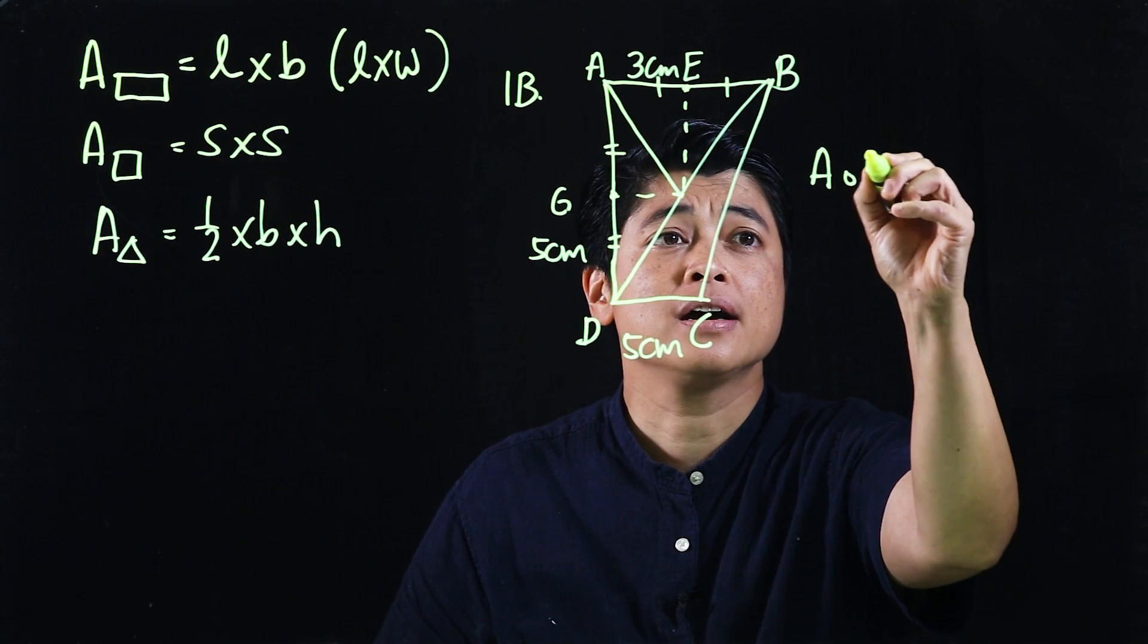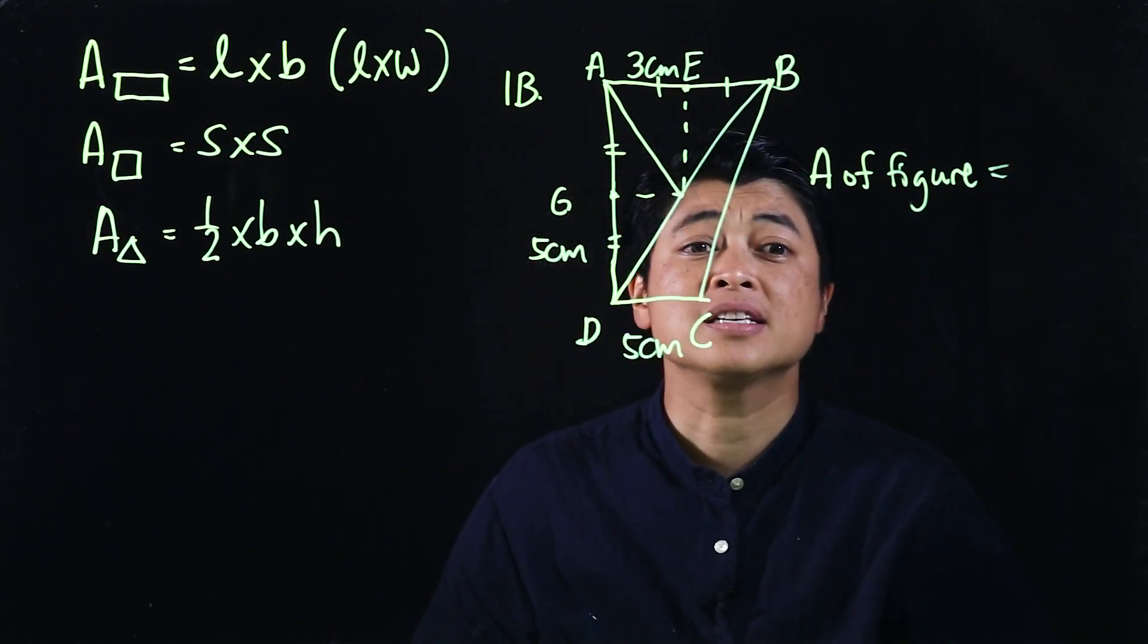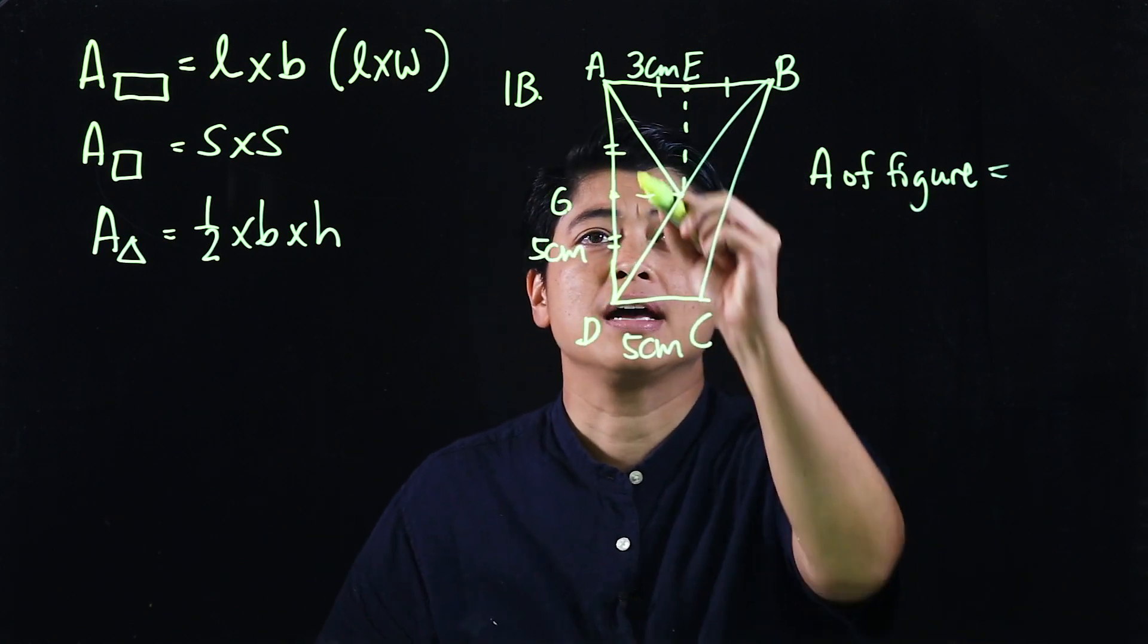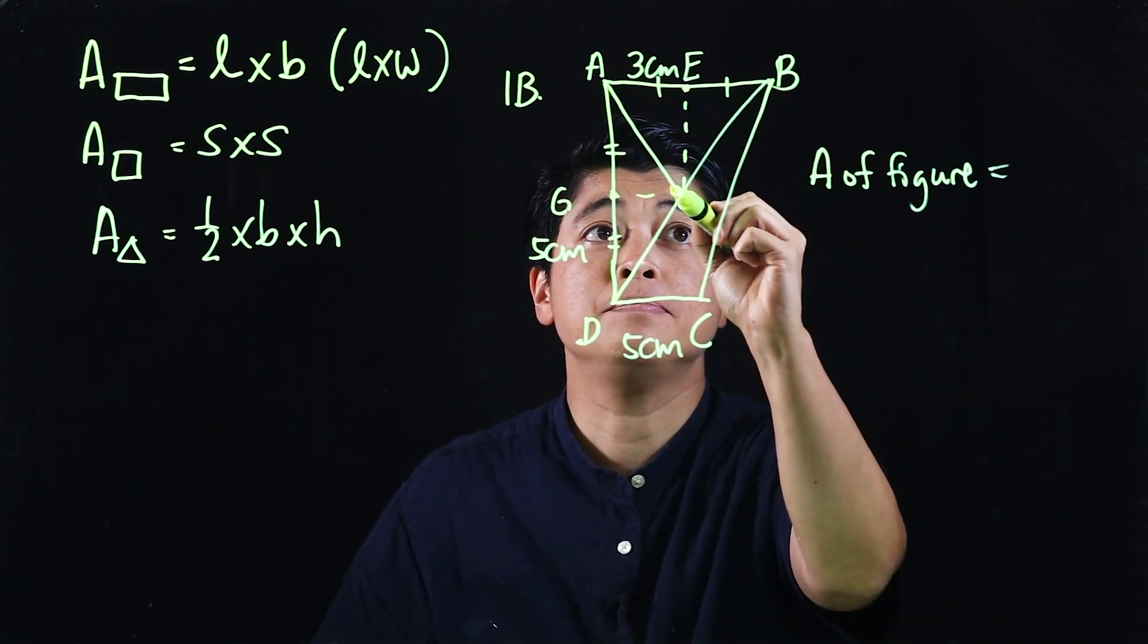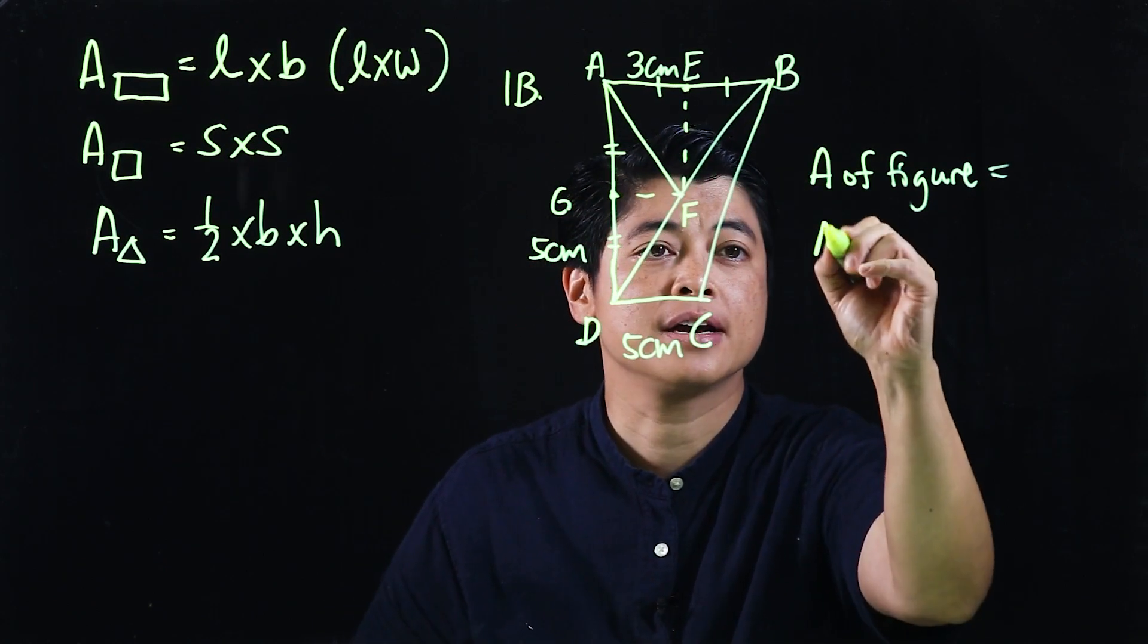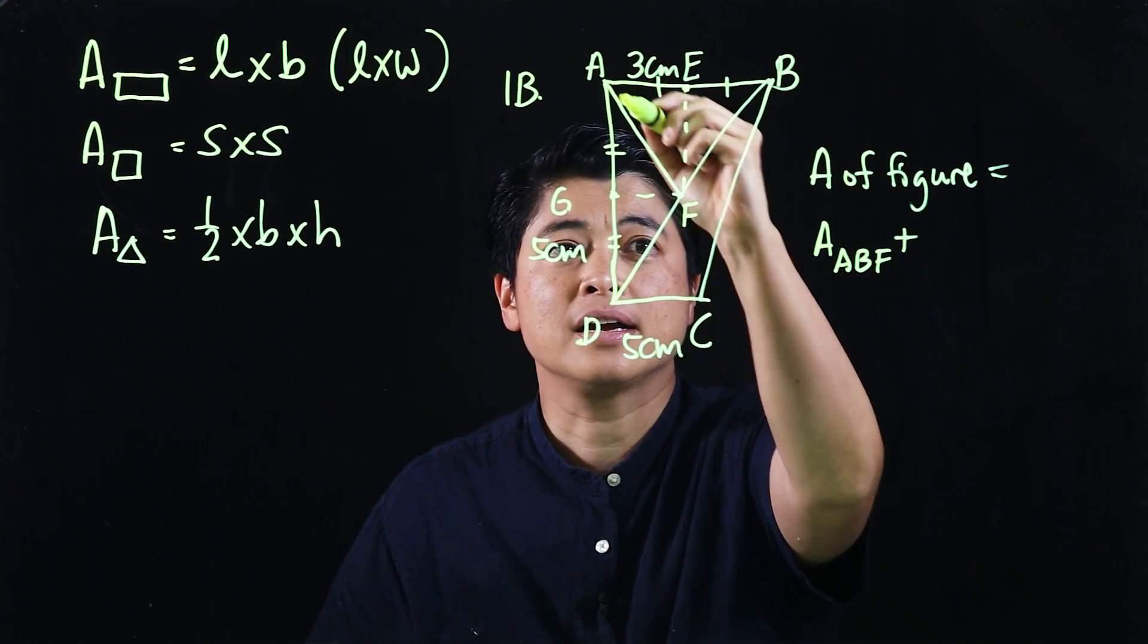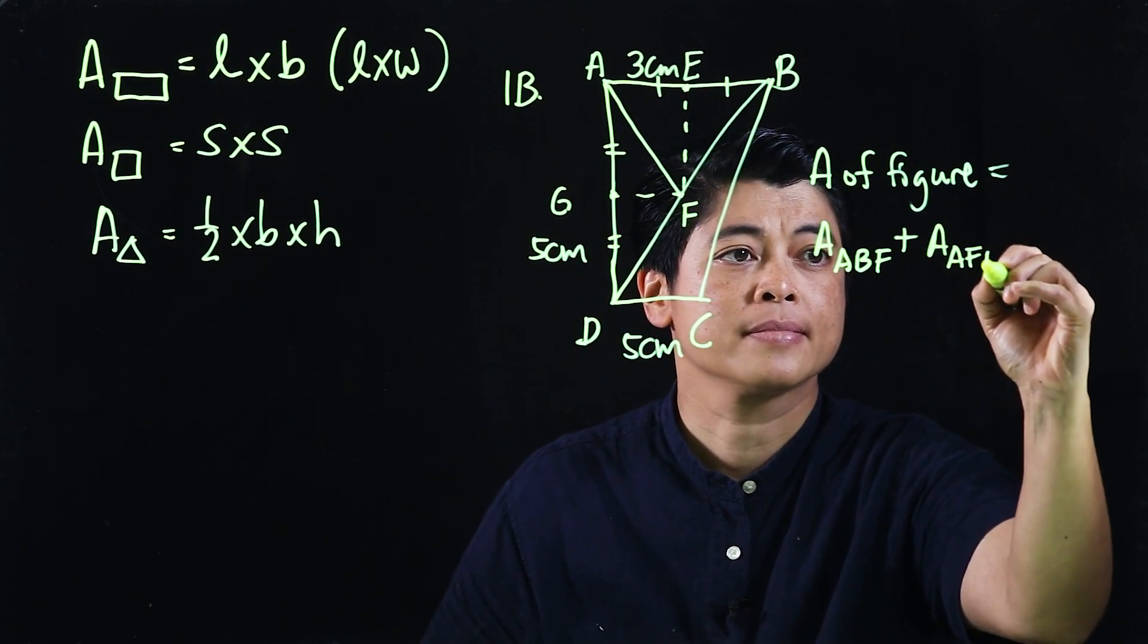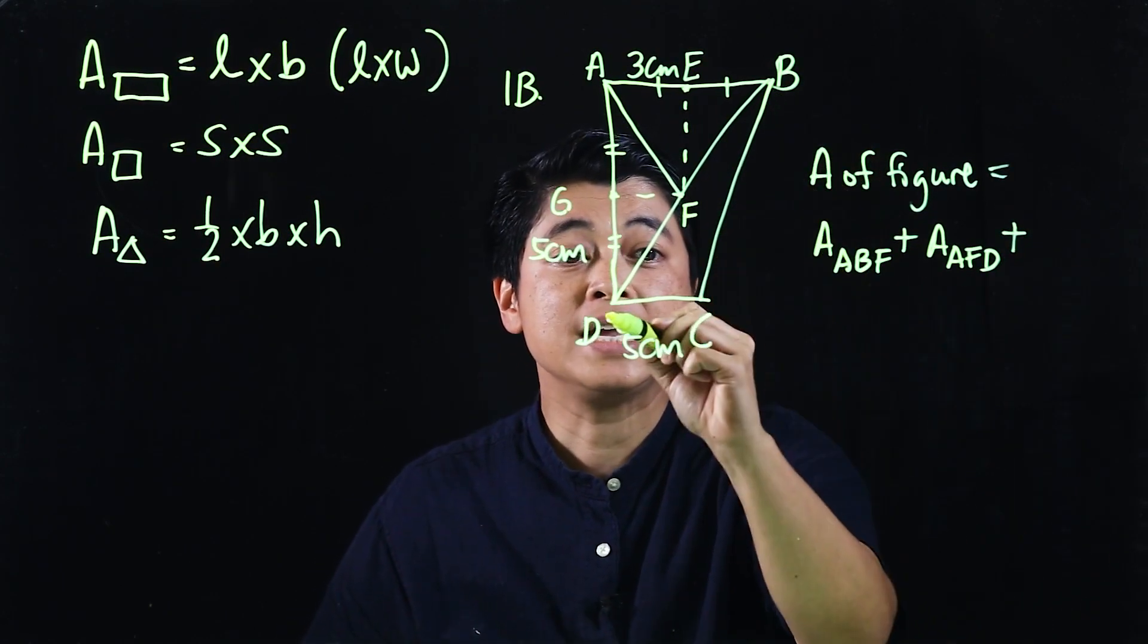To find the area of this figure, it would technically be the sum of different areas. We can look at the first area ABF, then we need to add area of AFD and area of BDC.